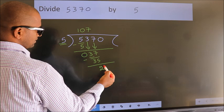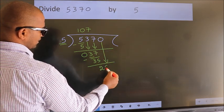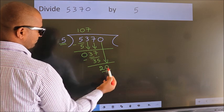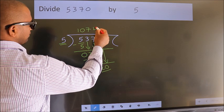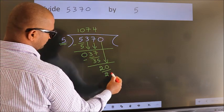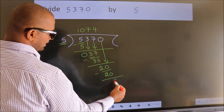After this, bring down the beside number. So 0 down. So 20. When do we get 20? In the 5 table. 5 fours is 20. Now we subtract. We get 0.